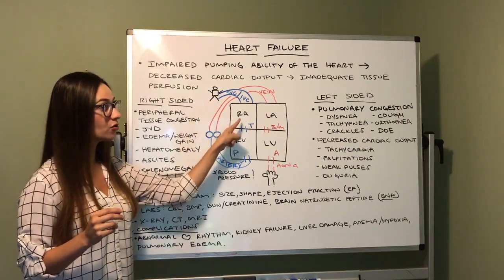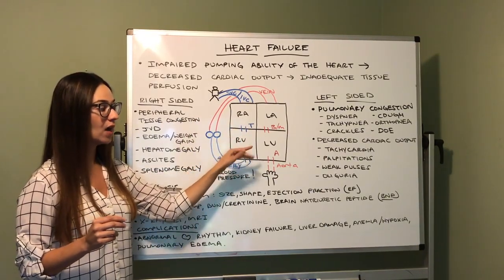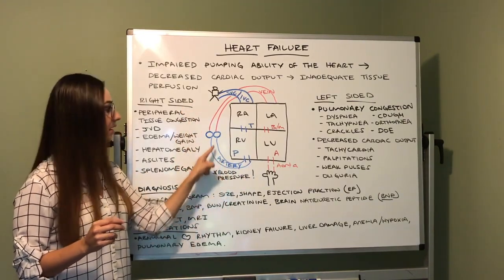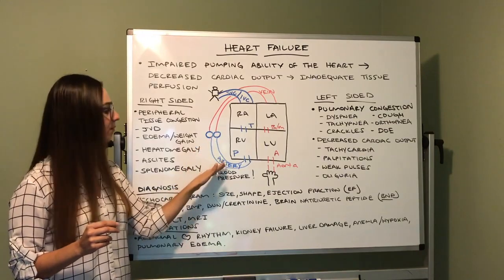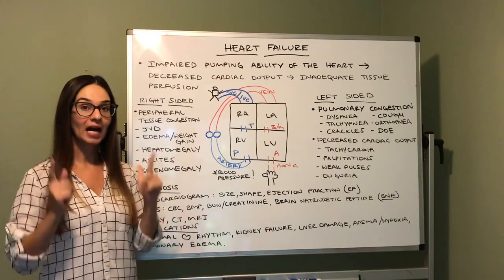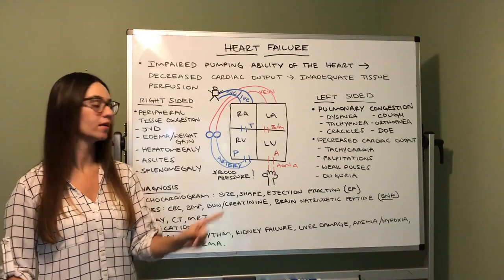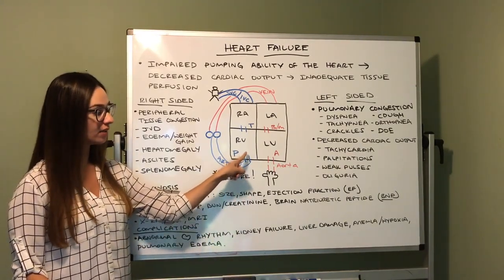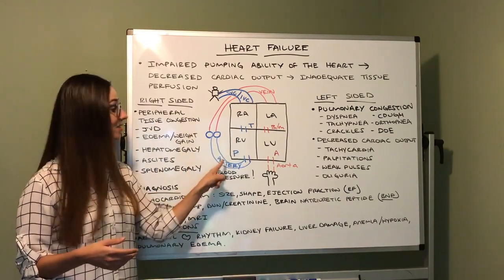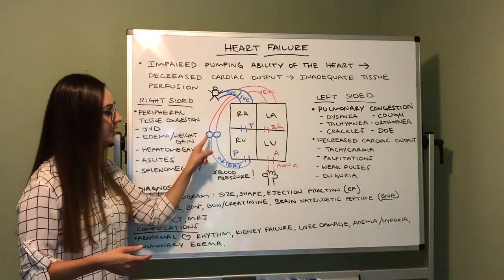Blood drops to our right atrium, which goes through our tricuspid valve to our right ventricle. Then the pulmonary artery takes deoxygenated blood to the lungs. Arteries are always going away from the heart — the pulmonic valve allows the artery to carry blood away from the heart. This blood is not oxygenated.